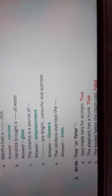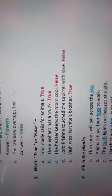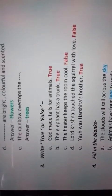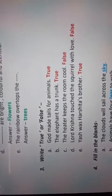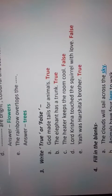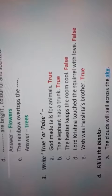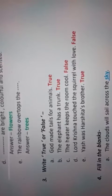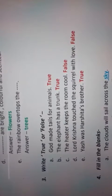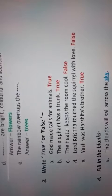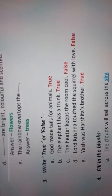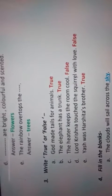Next question: write true or false. There are some statements you have to write whether these statements are true or false. God made tails for animals: True. The elephant has a trunk: True. The heater keeps the room cool: False. The heater keeps the room warm.